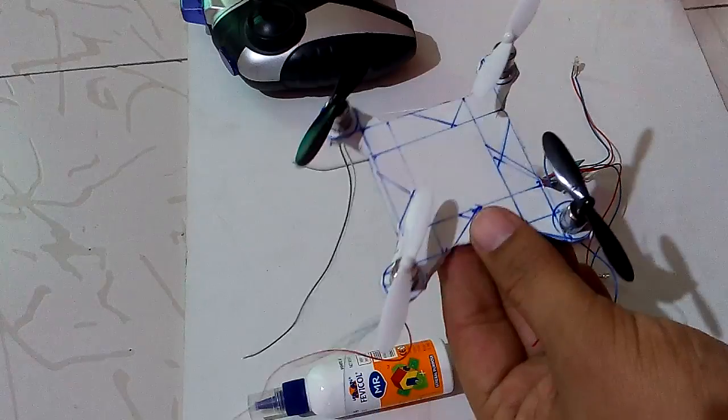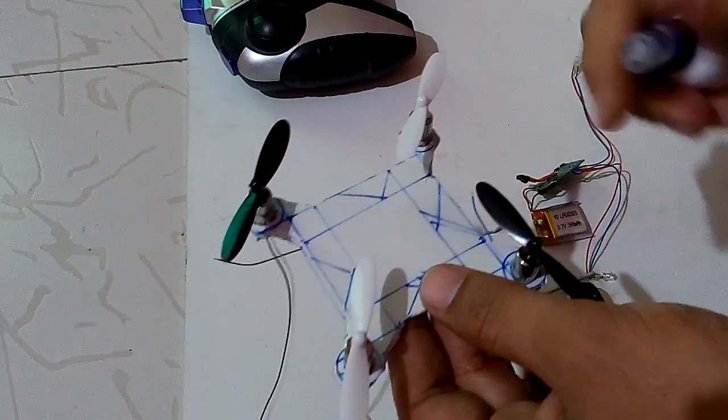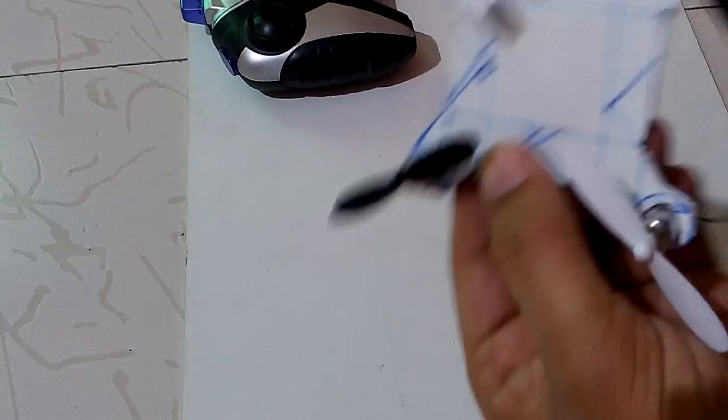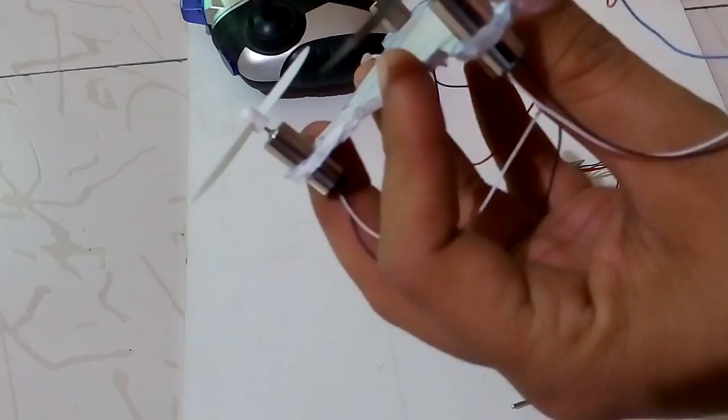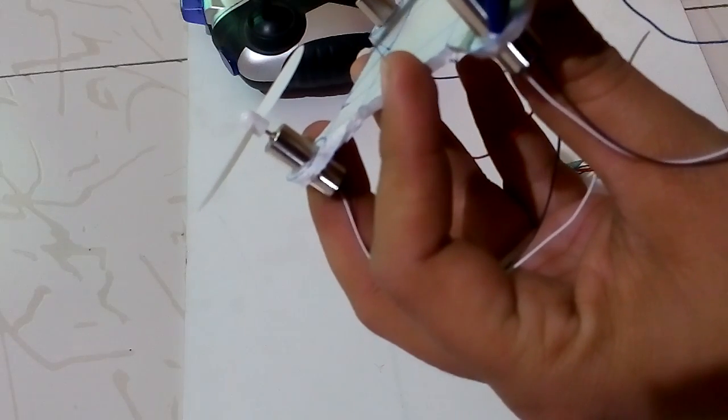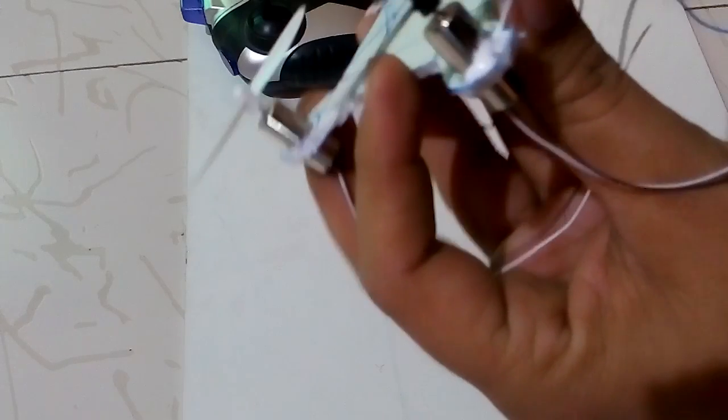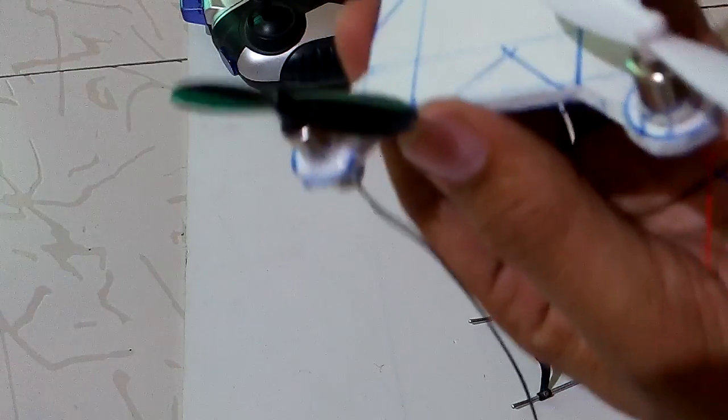As you can see, I'm using white adhesive. You can apply adhesive on these things to stick the motors on the particular chassis. Here I am applying white adhesive as you can see.